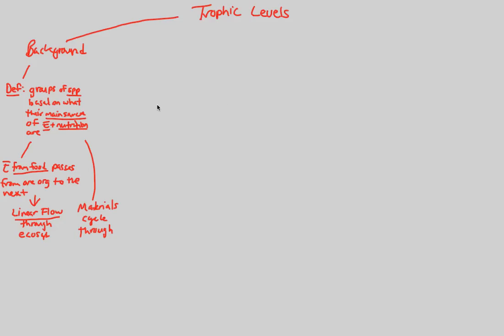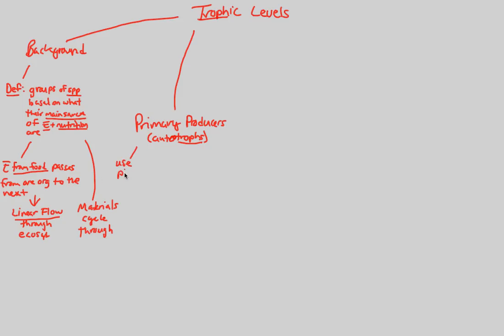The first trophic level is probably the most important: the primary producers. Remember, an ecosystem absolutely needs two things — decomposers and producers. Primary producers are otherwise known as autotrophs. 'Troph' refers to food or eating, and 'auto' means by itself. These are the organisms that use photosynthesis, converting radiant energy into chemical energy to manufacture and produce their own biomass.